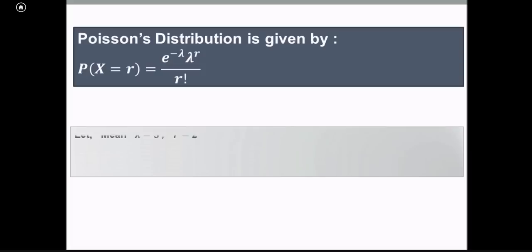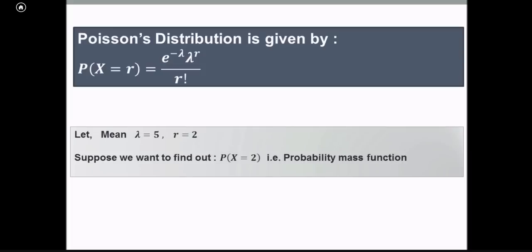Suppose we assume that lambda is equal to 5 and r is equal to 2. We have to find out what is the probability of x equal to 2, that is the probability mass function. We also have to find out the cumulative distribution function, that is probability of x less than or equal to 2, or probability of at most 2. This is nothing but probability of x equal to 0, plus probability of x equal to 1, plus probability of x equal to 2.